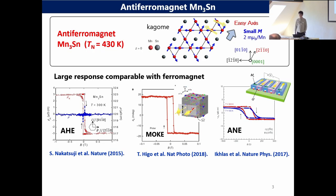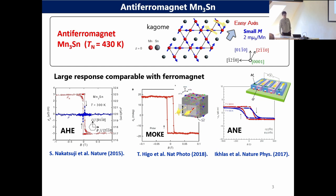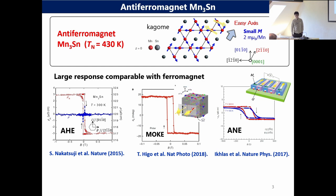Already the previous speakers gave an excellent introduction about this material, the antiferromagnet. This material is a very interesting antiferromagnet, and the Néel temperature is around 460 Kelvin in the bulk crystal case. In this material, it shows a kagome structure as shown here, and shows a very small net magnetization. However, even in this antiferromagnet, this material shows very large responses comparable to the ferromagnet — including the anomalous Hall effect, MOKE, and the anomalous Nernst effect.